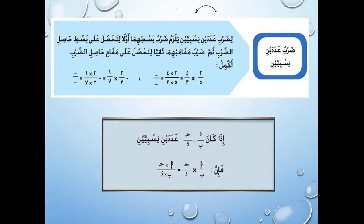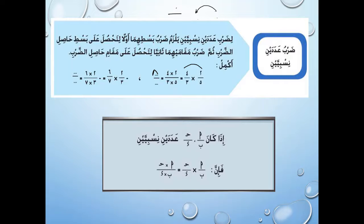ضرب البسطين يديني بسط حاصل الضرب، وبضرب مقام العدد الأول في مقام العدد الثاني يديني مقام حاصل الضرب. مثلاً لو هضرب 2/5 في 4/3، يبقى بسط العدد الأول 2 في 4 بيديني 8، وخمسة في تلاتة.